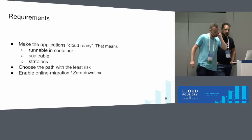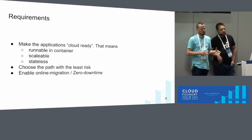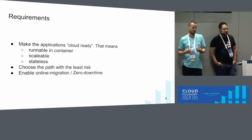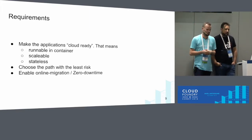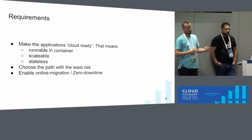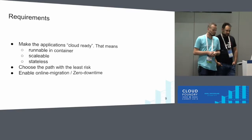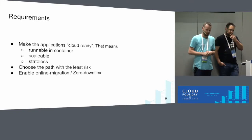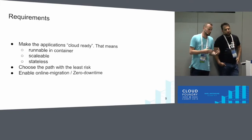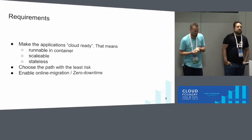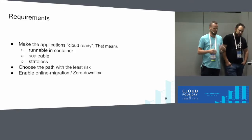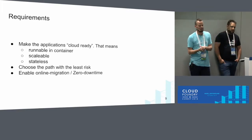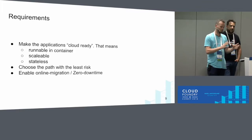Making the application cloud-ready technically means making it able to run properly in a container. That also meant taking out state as much as possible, or validating there was no state, to make the application scalable. Since the application was in a critical environment with so many requests, we had to choose the path with the least amount of risk — this wasn't an application where we could just try things out. We had to ensure the migration went as smoothly as possible without affecting end users, ideally enabling a direct migration from the old platform to the new one.